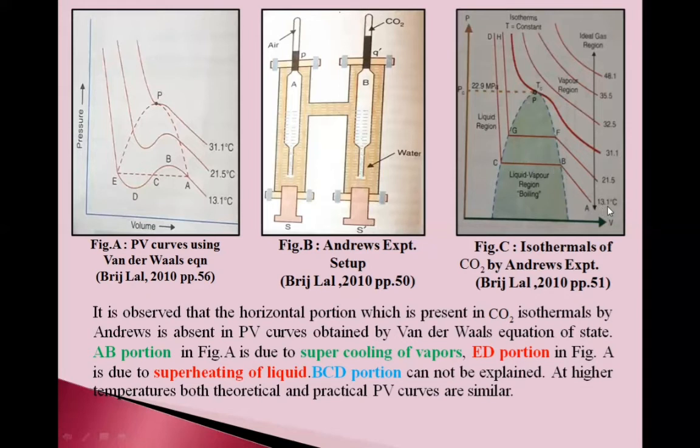These curves are at different temperatures. Temperature is increasing this way. As temperature increases, this horizontal portion decreases. This portion is converted to only one point, called the critical point. At this point, temperature is called critical temperature and pressure is critical pressure PC, critical temperature TC. Beyond this critical temperature, the gas cannot be liquefied though we increase the pressure.